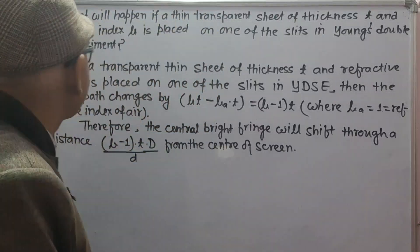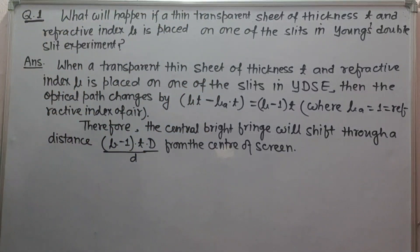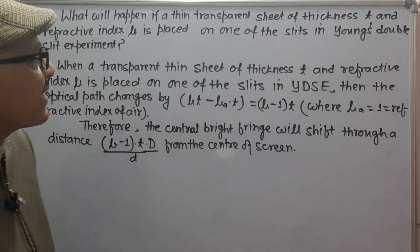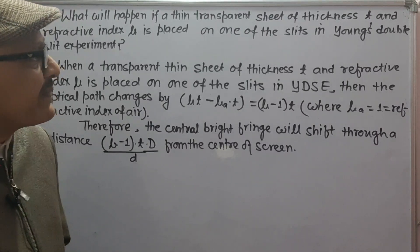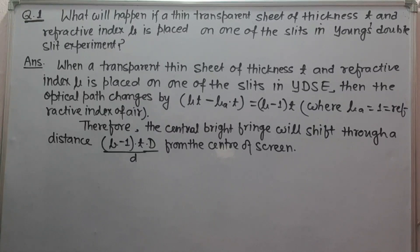The first question is the short question: what will happen if a thin transparent sheet of thickness t and refractive index mu is placed on one of the slits in Young's double slit experiment?